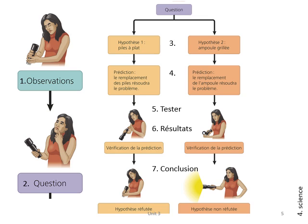Let's see how the seven steps of the scientific method apply. This woman has a flashlight that doesn't work. She observes it — turns it on and off — and it just doesn't light up. So she asks herself: why doesn't this work? Step three is to form a hypothesis. She has two different hypotheses: perhaps the batteries don't work, or perhaps the light bulb is burned out.